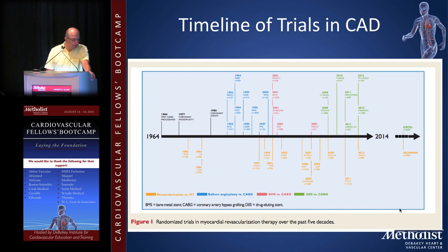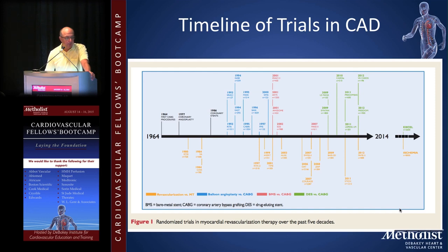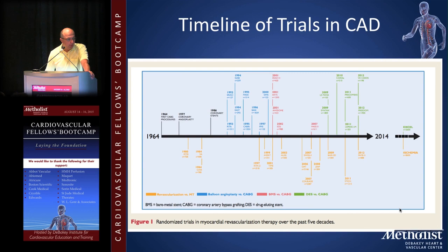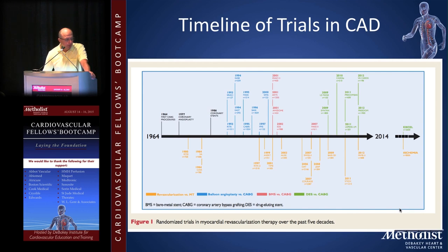This slide from the European Society guidelines published last year shows a timeline of trials since 1964 when the first CABG was performed. Everything below the line in yellow compares revascularization — CABG or PCI — versus medical therapy. Above the line you have trials comparing balloon angioplasty versus CABG, bare metal stenting versus CABG, drug-eluting stenting versus CABG, and early on, plain old balloon angioplasty.